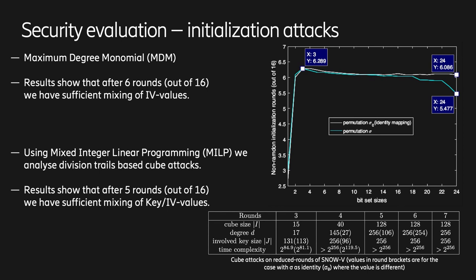In the paper, we also perform a security evaluation of the new cipher. Starting with initialization attacks, we look at maximum degree monomial attacks on the IV. In this attack, you fixate the key bits and most of the IV bits and then vary a number of IV bits. Then you look at the maximum degree monomial of the output bits as a function of those IV bits. If the distribution of the MDM is random, the mixing during the initialization is sufficient. In the graph to the right, we have the number of free bits on the x-axis and the number of initialization rounds that produce non-random outputs. As we can see, after about 6 rounds, the IV values are properly mixed into the state. We also looked at division trails based cube attacks using mixed linear programming. Also in this case, we see that after about 5 rounds, the key and IV are sufficiently mixed. It seems like there is a good security margin up to the total number of initialization rounds of 16.